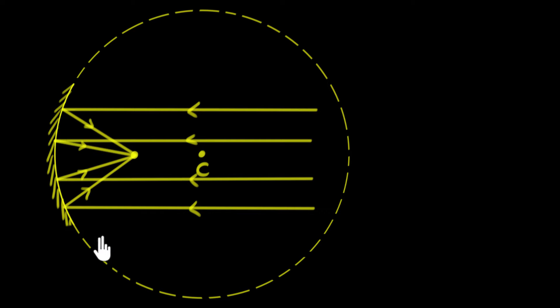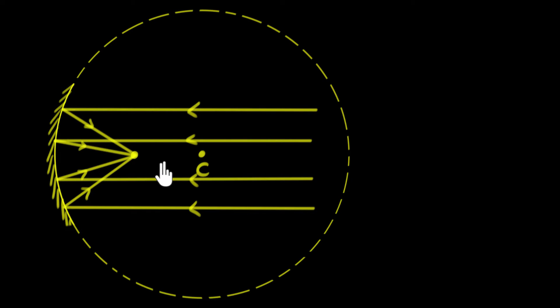We'd seen that if the mirror is too big — if it's too big a part of a sphere — then it won't be able to focus rays of light to a single point. So exactly how small should the mirror be to achieve this? We'll also introduce some technical terms because we'll be using those terms a lot in all future videos, so let's familiarize ourselves with those.